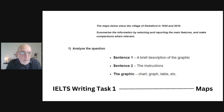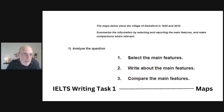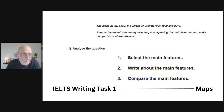As you begin to analyze the question, sentence one gives you a brief description of the graphic, then your instructions to write those four paragraphs. Your task is to select the main features, write about the main features, and compare the main features — a threefold task. You're not asked to give your opinion or reasons for why things have changed. All you're asked to do is report, summarize, and compare.